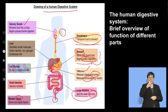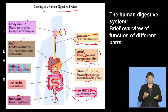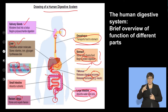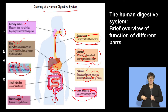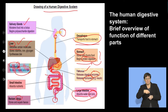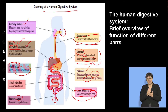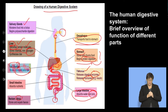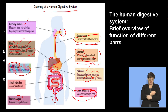The liver produces bile, which is stored in the gallbladder. The gallbladder concentrates and releases the bile into the duodenum. The liver detoxifies molecules such as alcohol, medication, and drugs. It also stores important vitamins, iron, and glycogen — a complex carbohydrate that the body stores and, when needed, converts back into glucose to provide energy.